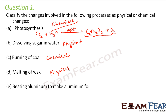Beating aluminium to make aluminium foils — when we beat aluminium, we are only trying to change its shape, so only the physical property is being changed. Chemically, it is still the same. So this is again a physical change.